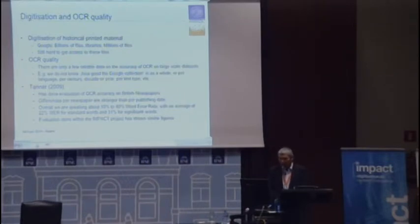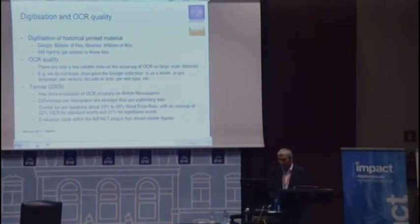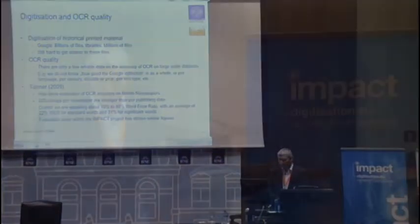Users are often used to expecting recognition rates near to 100%, near to what they are used to with digital-born texts. The overall recognition rates in terms of word error rates are typically between 10 and 40%, depending on the documents. Simon Tanner did a large-scale evaluation of British newspapers and found a 22% word error rate for standard words and 31% for significant words. For the user, this means that searching a collection for an interesting item will result in missing 20 or 30% of all occurrences.